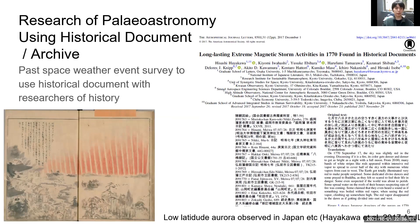There is another example using a historical document archive. This is a research paper in which we researched past space weather events using a historical document archive together with historians. The supplement of this paper contains information from the document archive. In this paper, not only English alphabet, but also Japanese kanji, hiragana, and katakana were written in the supplementary material.